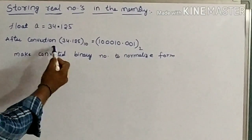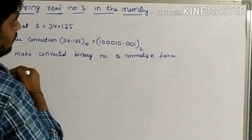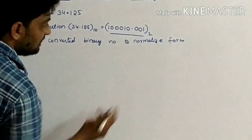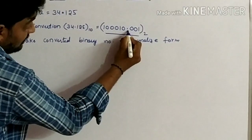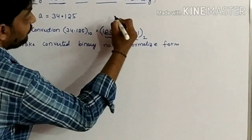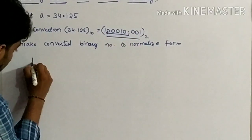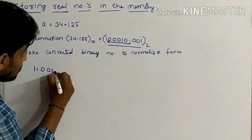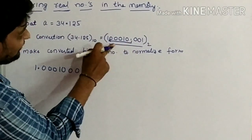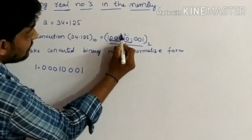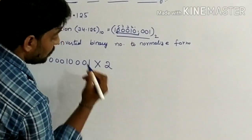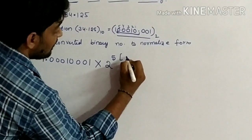After conversion of 34.125 into binary, it looks like this. Next, to normalize this binary number, we shift the dot to the starting position. If we shift the dot to the starting position it will become 0.0001000100001. How many bits have we shifted? 1, 2, 3, 4, 5 — we have shifted 5 bits, so this is 1.000100001 times 2 to the power of 5. This is the exponent.